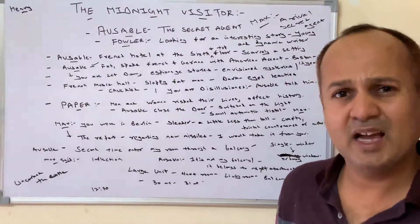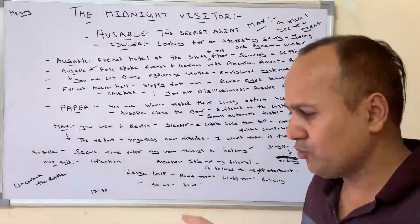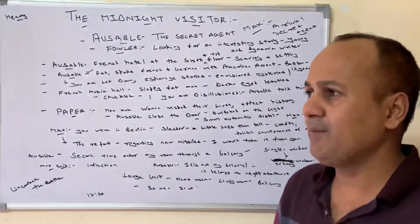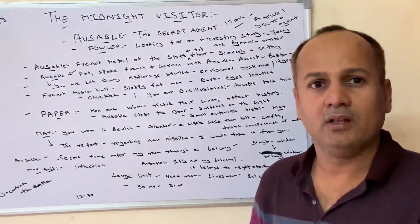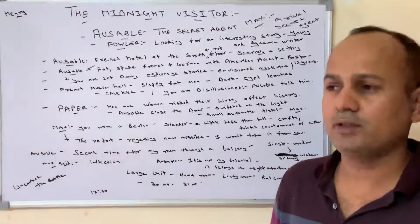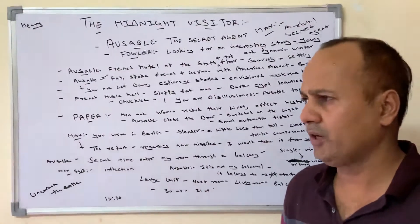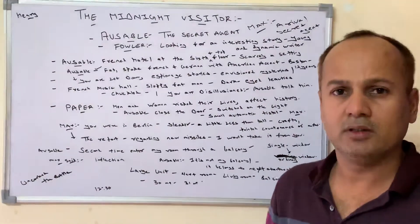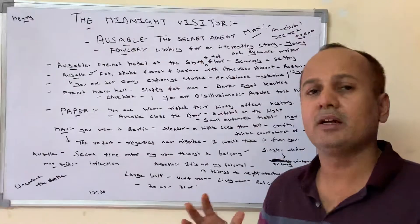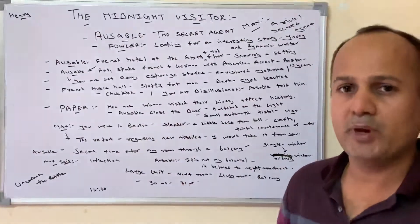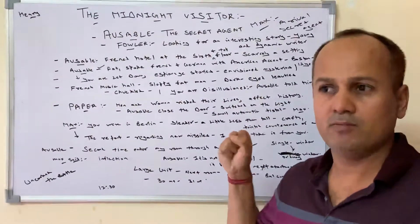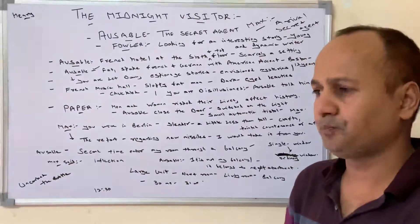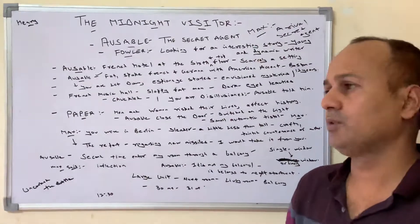Ossival says: 'I thought you were in Berlin — how did you come to my room?' Max says: 'I came here for that piece of paper. That piece of paper is very critical and important.' Max wanted to steal it from Ossival and said: 'Give me that piece of paper — it will be safer with me rather than with you.' Ossival replies: 'Really? Is that the truth?' and says: 'Okay.'